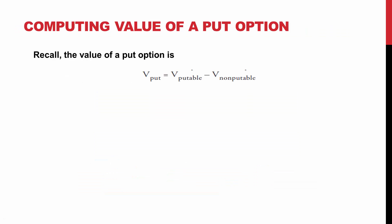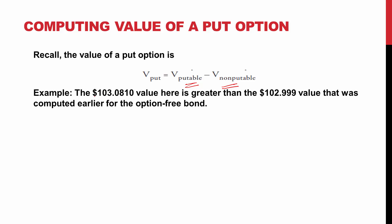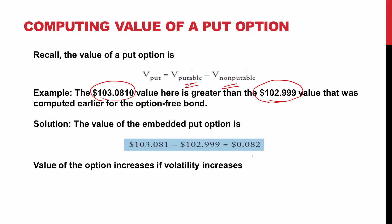Now let's calculate the value of the put option. Recall that the value of the put option equals the putable bond value minus the non-putable bond value. From the previous example, the putable bond value was $103.081. If the value of the option-free bond is $102.999, then the put option value is the difference: $0.082. Note that the value of an option always increases if volatility increases.